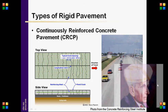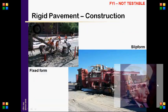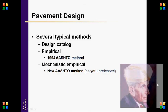Types of Rigid Pavement include Jointed Plain Concrete Pavement (JPCP) and Continuously Reinforced Concrete Pavement (CRCP). A photo from the Concrete Reinforcing Structure is shown for reference.